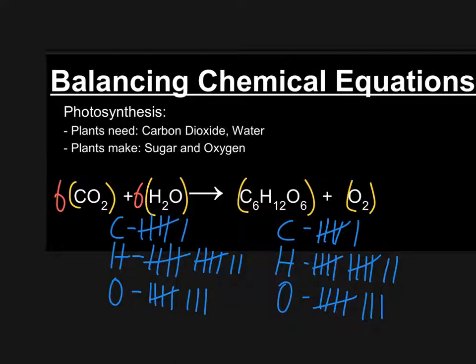But now, if we do the math on our oxygens, we have 6 times 2, which is 12, and then 6 times our implied 1, which is another 6. 12 and 6 gives us 18 altogether. So if we add our tallies here, that would be 4, 5, 6, 7, 8, 9, 15, 16, 17, 18 oxygens.